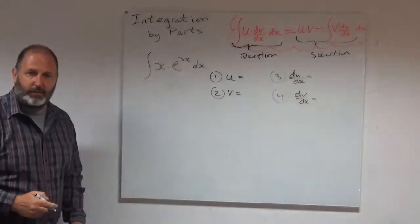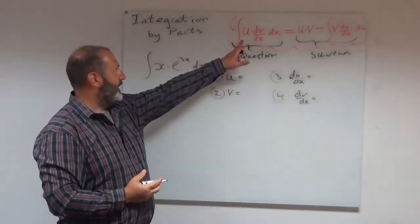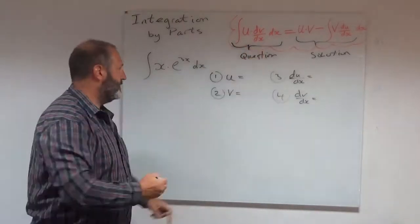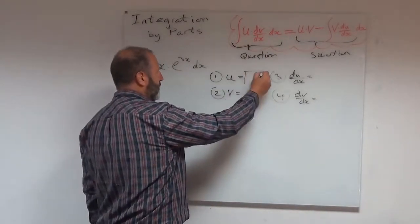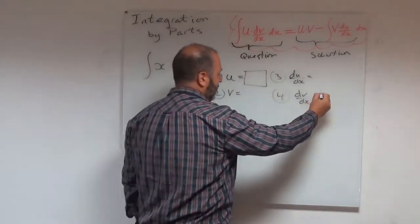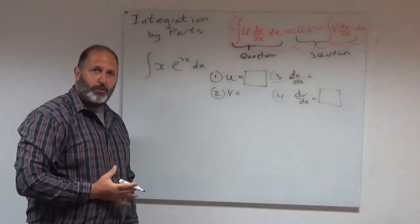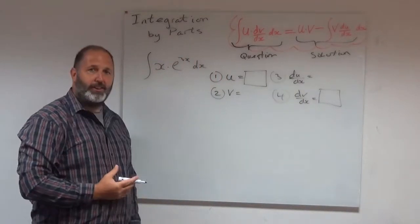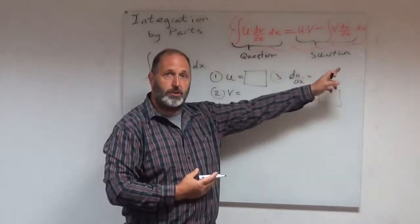This is my template. Let's look at the question. The question has a u and a dv dx. So in my question here, I have u and I have dv dx. They're given to me. And I have to find the other two terms. If I can find all these terms, I can just write out my solution and I'll finish.